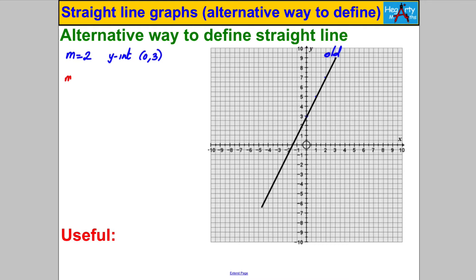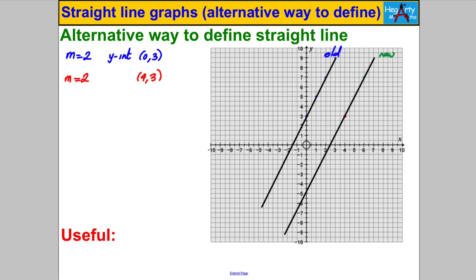Now suppose instead I wasn't given the y-intercept, but I was given the gradient — say the gradient is 2 — and I was told a point on the line, say (4, 3), that was definitely on the line. What I could do is think of defining the straight line starting at (4, 3), kind of like how I started with the y-intercept, and define it as the set of points I can count using a gradient of 2 away from (4, 3): one across two up, one across two up, one back two down, etc. That would define a straight line in a different way — a gradient and a given point.